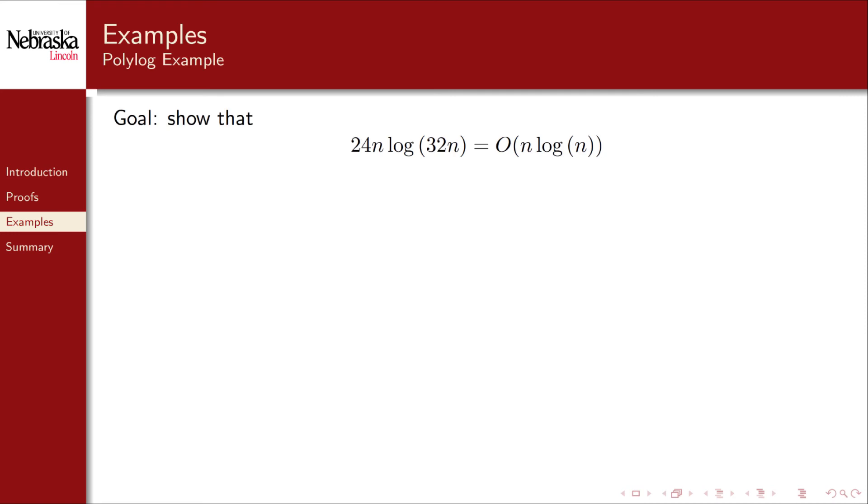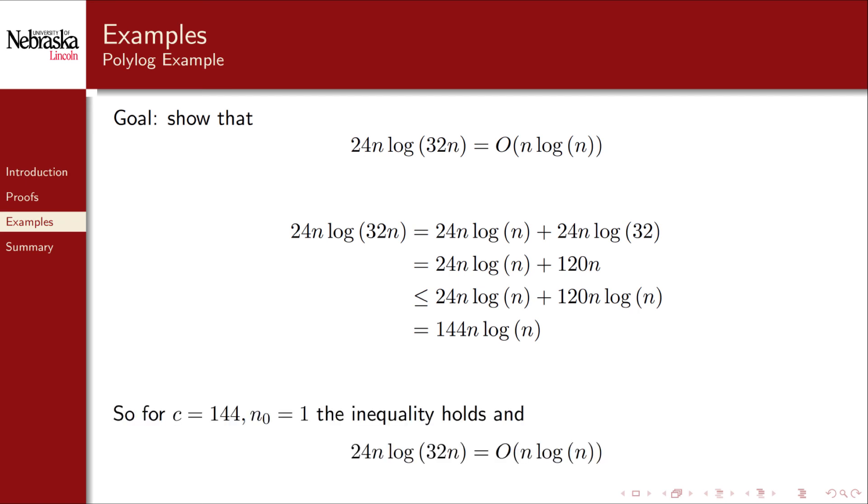Here's another example involving both polynomials and logarithms or polylog functions. Let's show that 24n log of 32n is big O of n log n. We start with the left hand side and split it up using another log identity. Log of 32 simplifies and we make the second term larger by multiplying by log n which is a monotone growing function so the inequality is satisfied. This allows us to simplify to one term. So for c being 144 and n naught being 1, we've shown the big O characterization.